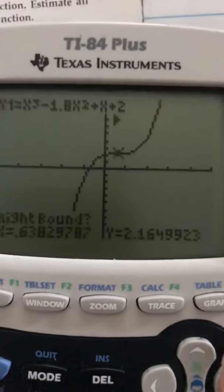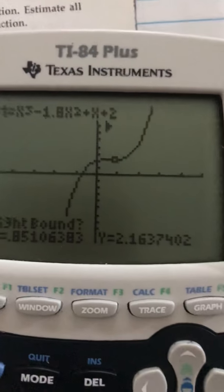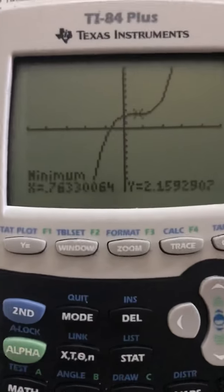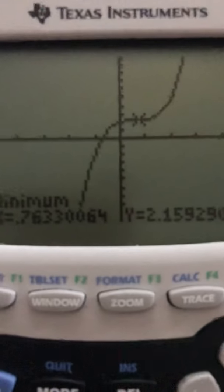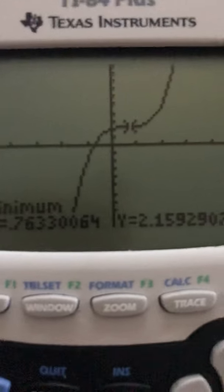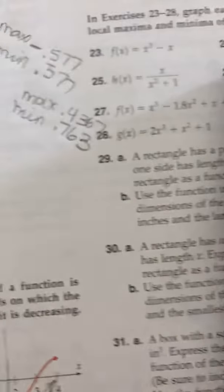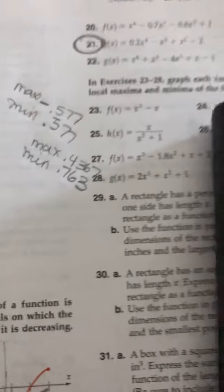All right. So that's left bound. Right bound. Guess. So there's my minimum. My minimum is at .763. All right. So that's 27. All right. 33.